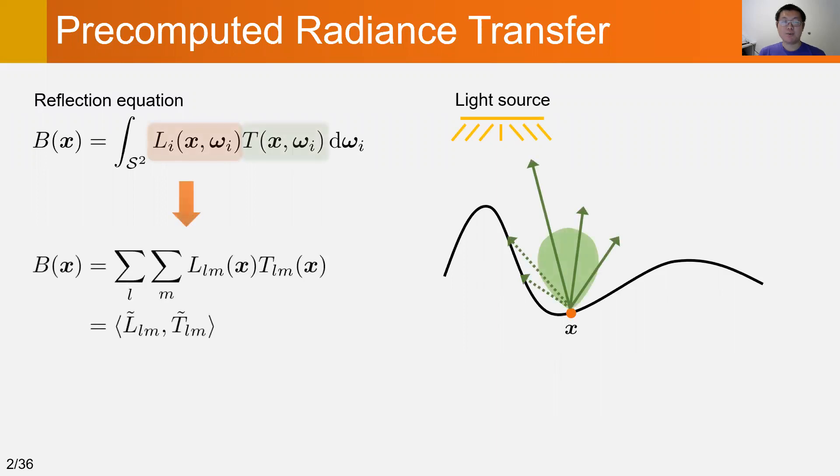By projecting both functions onto a set of spherical harmonic basis functions, the double product integral can be simply rewritten as a dot product of the SH coefficients.